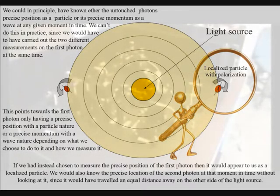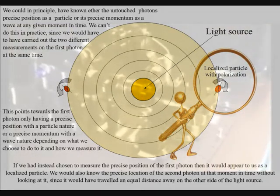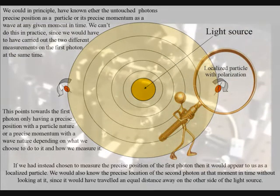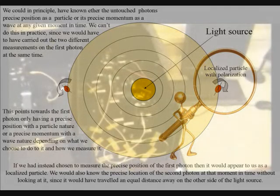This points towards the first photon only having a precise position with a particle nature or a precise momentum with a wave nature depending on what we choose to do to it and how we measure it.